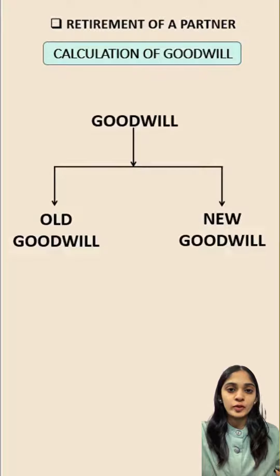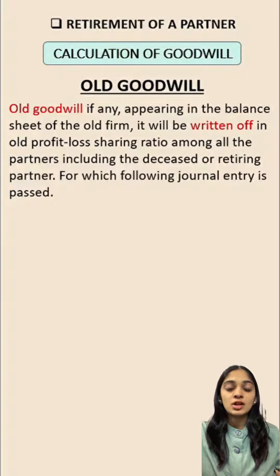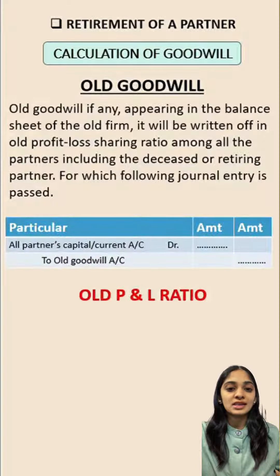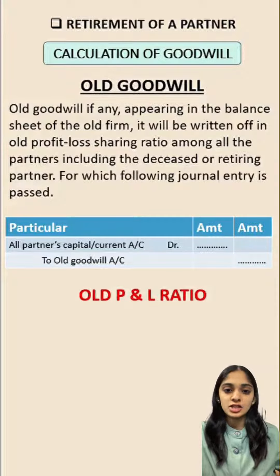There are two types of goodwill. One is old goodwill and other is new goodwill. Old goodwill appearing in the balance sheet of the old firm is to be distributed among the old partners in the old ratio. The journal entry will be old partner's capital account debit to old goodwill, and it will be distributed among the partners in the old P&L ratio.